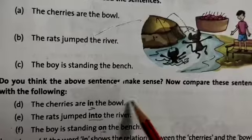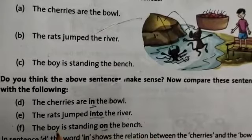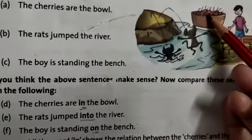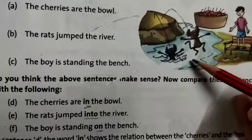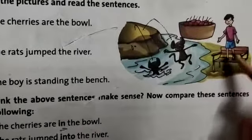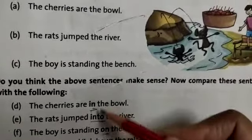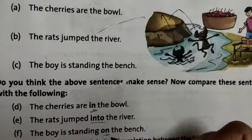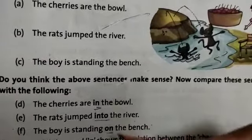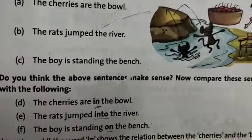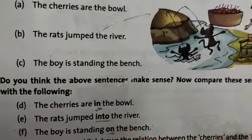What is the whole sentence? The cherries are in the bowl. The rats jump into the water. The boy is standing on the bench. So dear students, 'in,' 'into,' 'on' — all these words used in the sentence are preposition words.